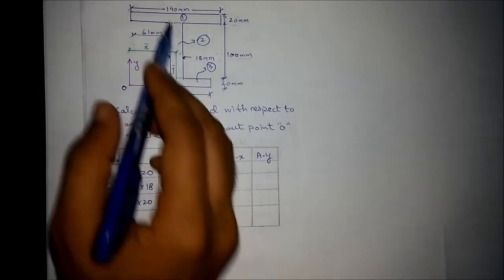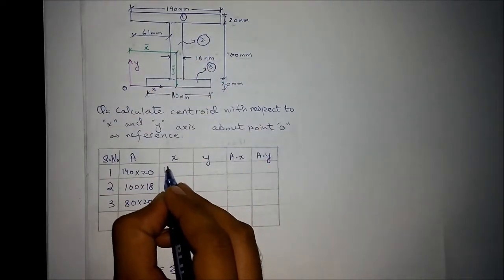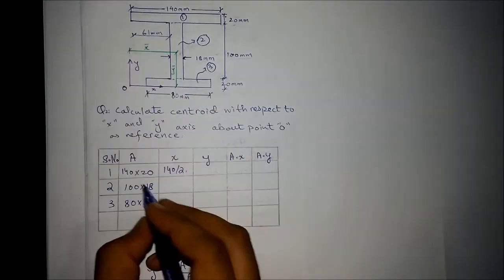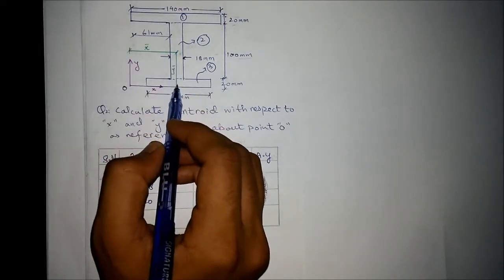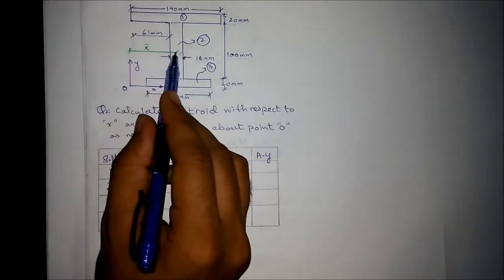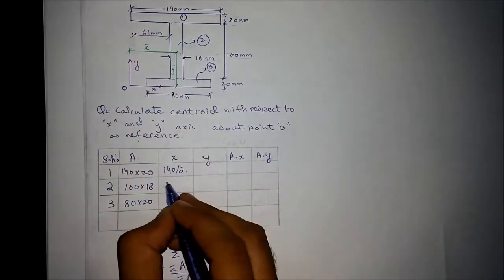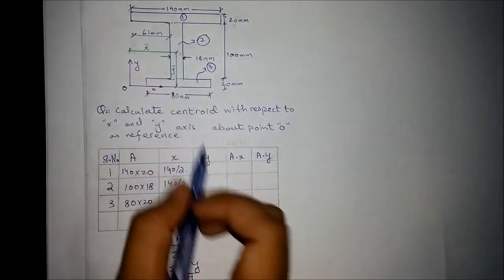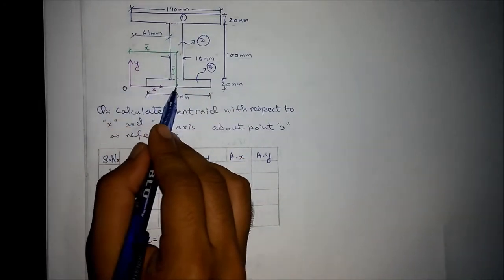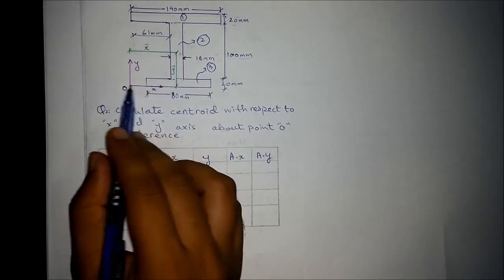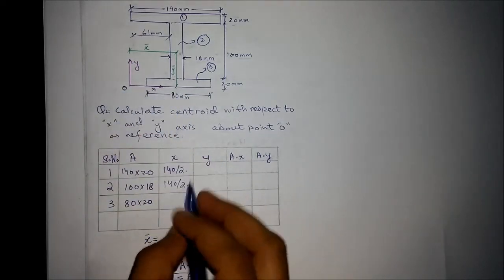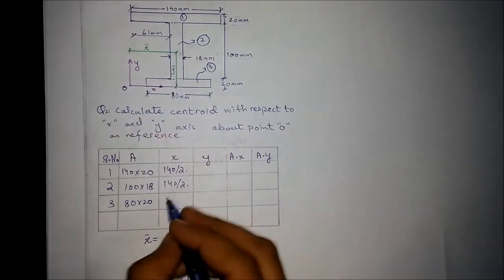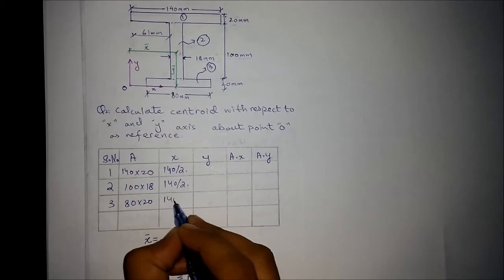The x coordinate for shape 1 is 140 divided by 2, since it is a rectangle starting from the origin. For the second and third elements, the x coordinate is also 140 divided by 2, since the distance from the x axis origin point is the same. For the final shape, this distance is similarly 140 divided by 2.